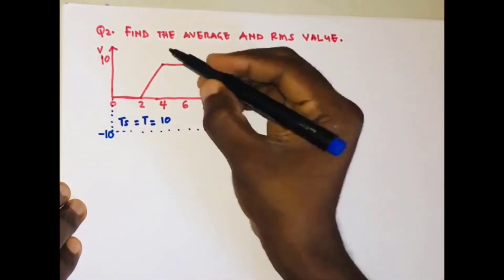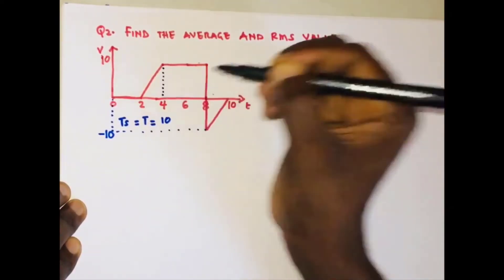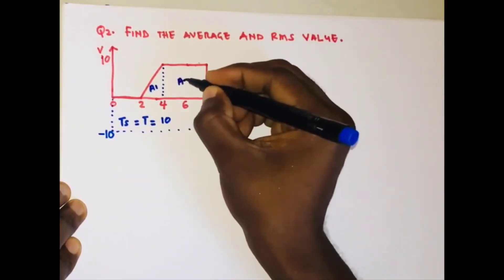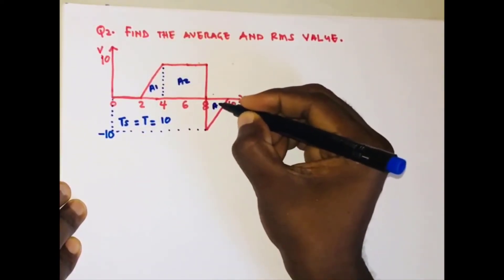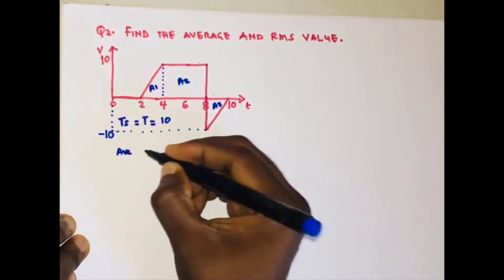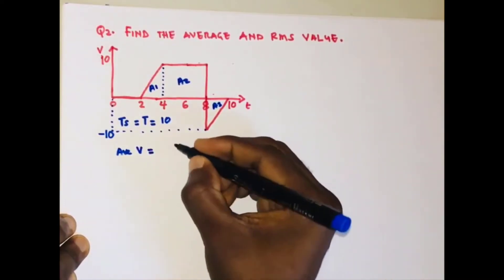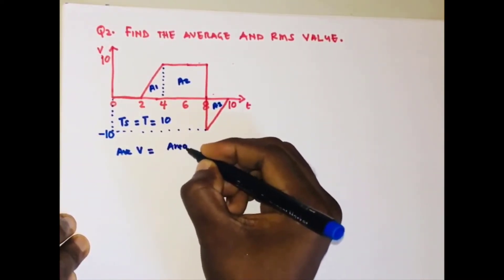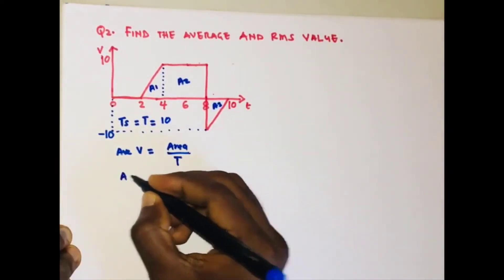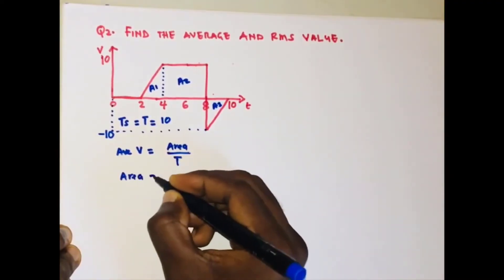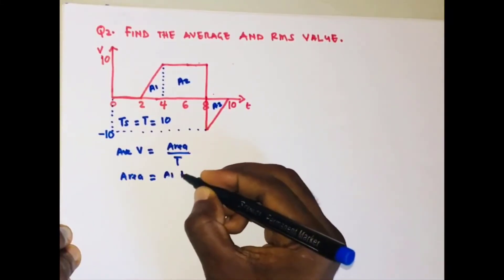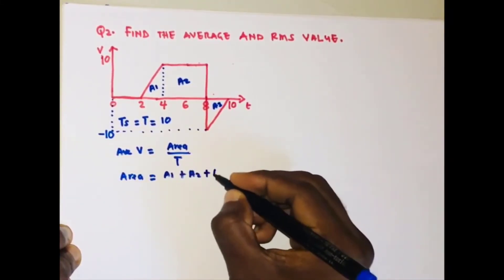Let's divide the structure into A1, A2, and A3. The average value is the total area under the waveform divided by the period. So the total area equals A1 plus A2 plus A3.